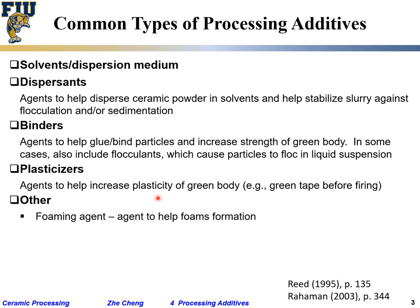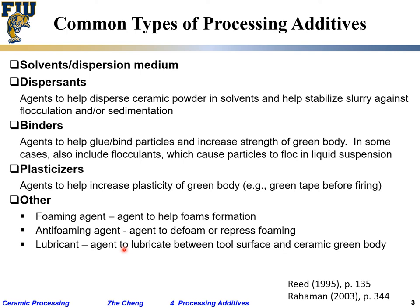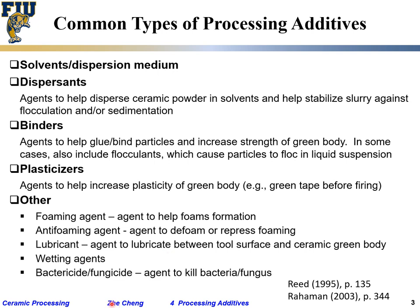There are also other agents: foaming agents help generate foam if you want high porosity in a thin layer; anti-foaming agents are used when you do not want gas bubbles trapped in the material. Lubricants facilitate the motion of slurry or paste within your die so it doesn't stick. Wetting agents help wet the body. Fungicides and bactericides kill bacteria to prevent unwanted smells during processing, since organics can generate odors.